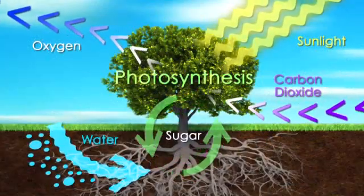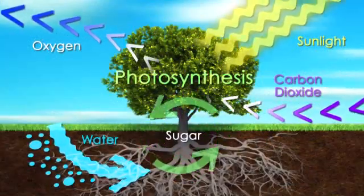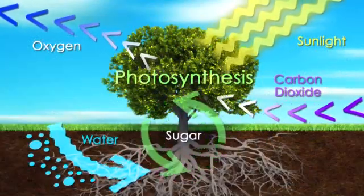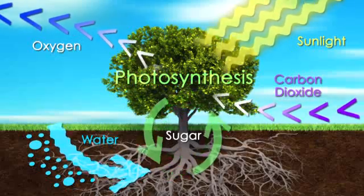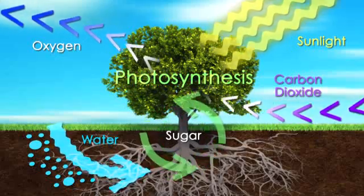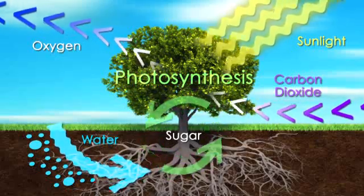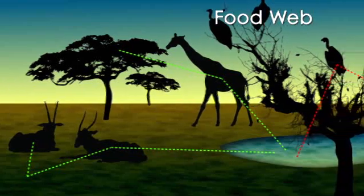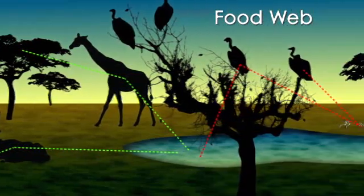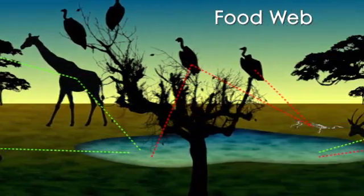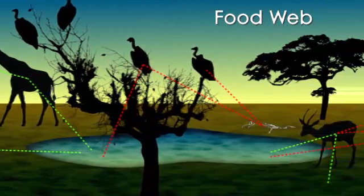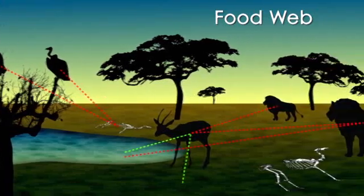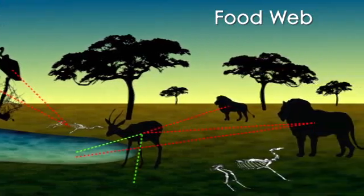Ecosystems need energy. In most cases, this energy comes from sunlight. Producers, like plants, take light energy and convert it into usable sugar energy through photosynthesis. As animals consume the energy from plants, they are eaten by other animals and ultimately decompose back into the soil. The energy moves through the ecosystem via a food web.